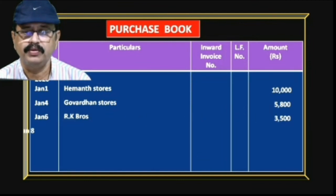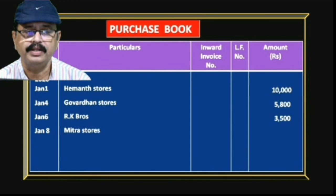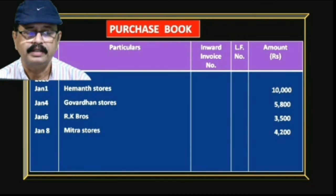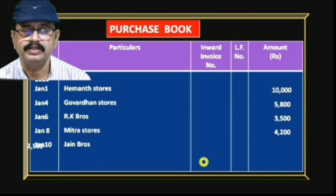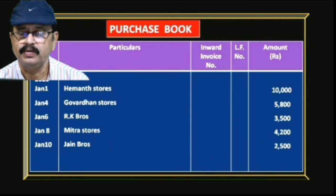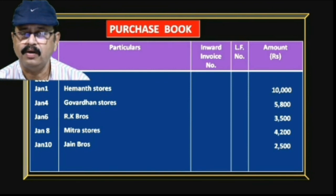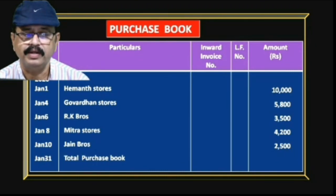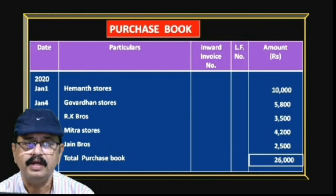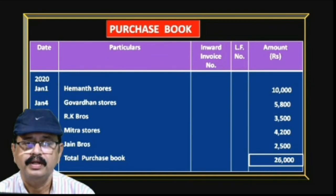January 6th — purchased goods from RK Bruce, amount 3,500. January 8th — purchased goods from Mitra Stores, amount 4,200. January 10th — Jane Stores, amount 2,500. After that we add all the transactions and get the total on January 30th: 26,000. In this way you can prepare the purchase book — practice more problems and you will get perfection.